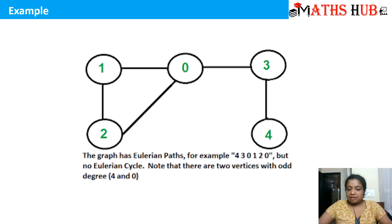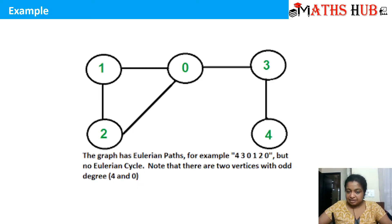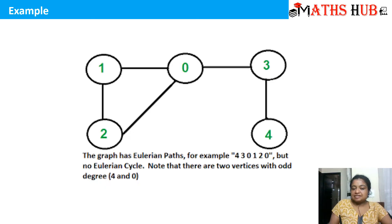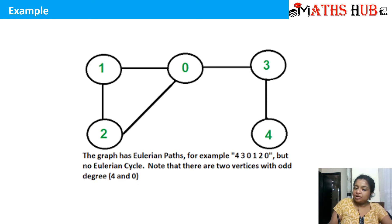Let's take another example. In this graph, the edge 0-4 has been removed. Now this graph does not possess an Eulerian circuit. If I start from 2, I go 2 to 1, 1 to 0, 0 to 3, 3 to 4 — but the edge 0-2 is left behind. Similarly, starting from 0: 0 to 2, 2 to 1, 1 to 0, 0 to 3, 3 to 4 — it's not an Eulerian circuit because I cannot come back to 0 and cover all edges. So an Eulerian trail exists, but not an Eulerian circuit.